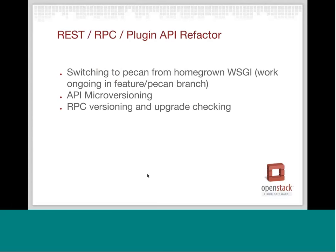We're continuing a bunch of work around the REST and RPC plugin layers as well. We actually have a feature branch looking to move us from our homegrown WSGI layer into using the Pecan library — that work is actually ongoing right now and going pretty well, so we're hopeful to land that before Liberty too. We have some API micro-versioning work being done at this point as well, which I think is going to benefit a lot of people. And we've done a lot of work around RPC versioning in Kilo, and now we're adding some support for pre-checking to ensure that stays consistent.